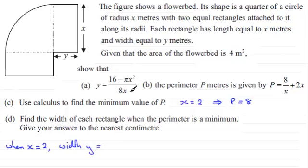We just substitute in our value of 2, so we've got 16 minus π multiplied by 2 squared, and that's all divided by 8x, x being 2, so it's 8 times 2. Work this out on your calculator.